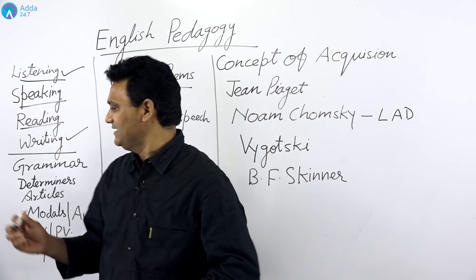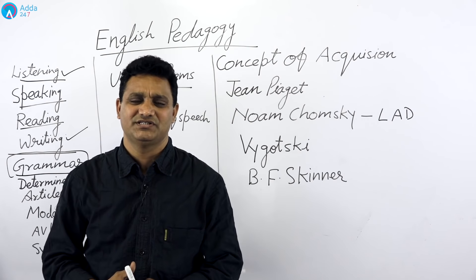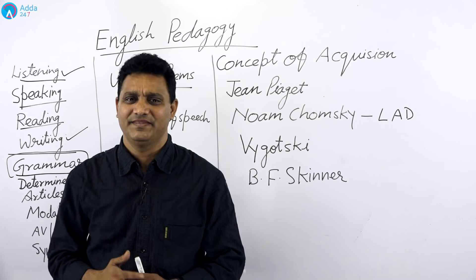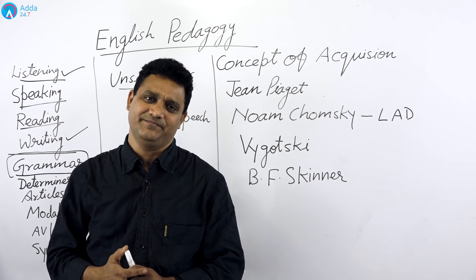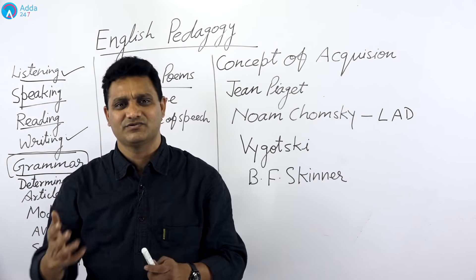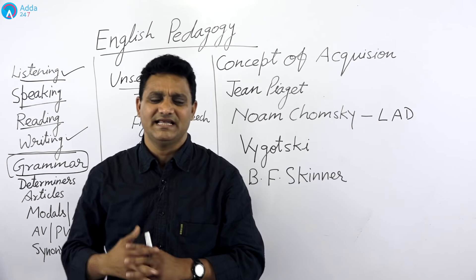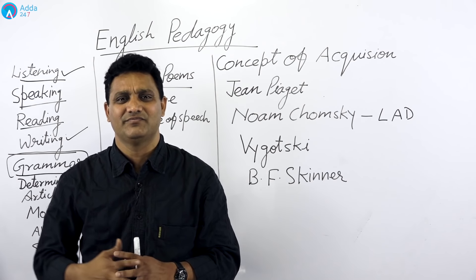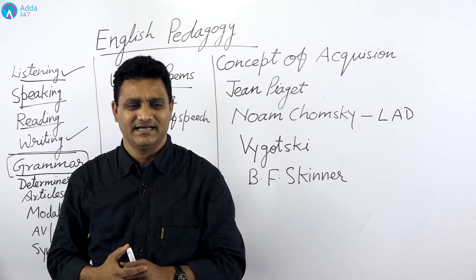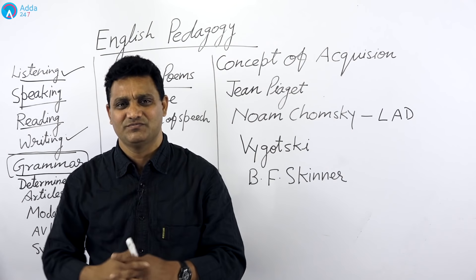Doosre part mein hai grammatical part. Grammar ke andar aapko parts of speech taiyar karna hai: noun, pronoun, adjective, verb, adverb, preposition aur conjunction. Sentence ke andar arrangement ke andar questions puchhe jaate hai. Doosra jo part hai - determiners, article, modals aur auxiliary verb taiyar kar lenge. Shall, should, may, might, can, could - ye saare modals hote hai. Auxiliary verb means helping verb - is, am, are, was, were. Is ke baad active voice aur passive voice, synonyms, antonyms - ye kuch grammatical parts hain jahan se question puchhe hi jayenge.